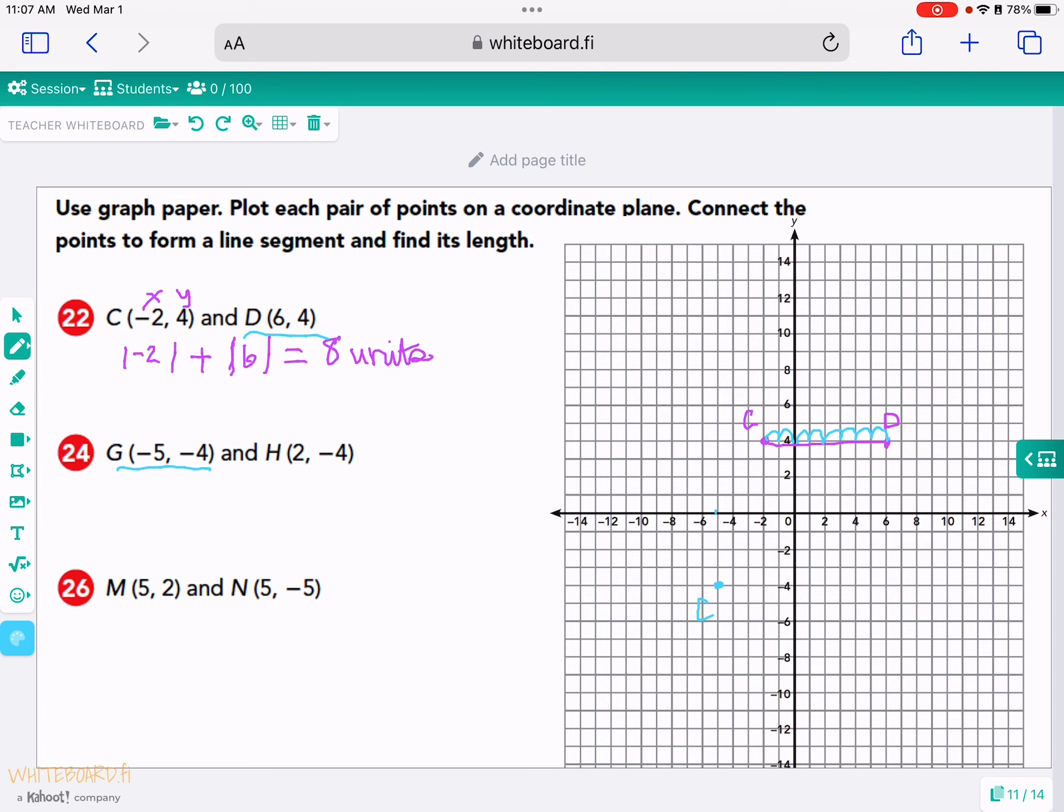Okay, this is G. And the point for H is at 2. That's a positive 2 on the x-axis and negative 4 on the y-axis. So that's right here. Okay, and that's point H. I just connected them as I was asked to do, and now I've got to figure out what is the length of this line segment. Well, the absolute value of negative 5 plus the absolute value of 2 will give me 7 units.